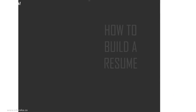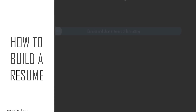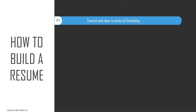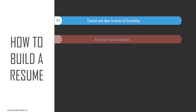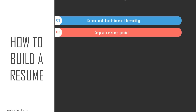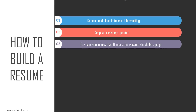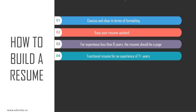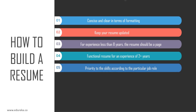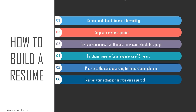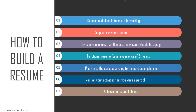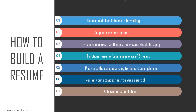Keep a few points in mind: your resume must be concise and clear in terms of formatting, and you need to keep it updated. For experience less than eight years, it should be a one-page functional resume. For two or more years of experience, prioritize skills according to your job role. Don't forget to mention your activities, and do write about achievements and hobbies, but keep it simple.